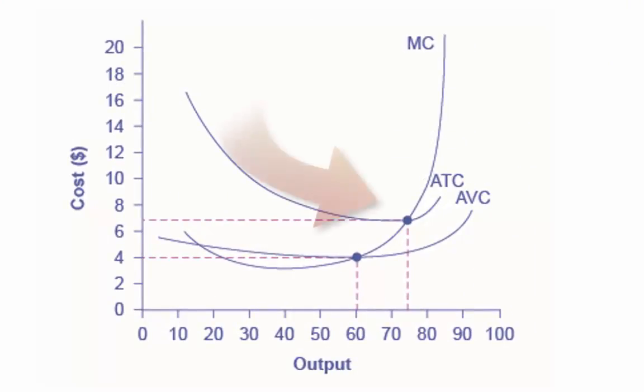Average total cost, ATC, is calculated by dividing total cost by the total quantity produced. The average total cost curve is typically a U shape.